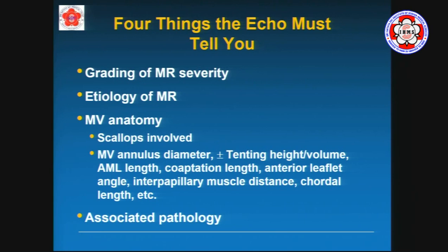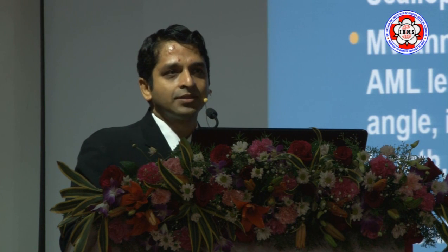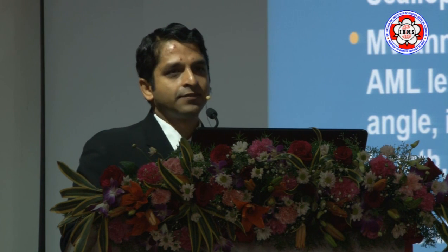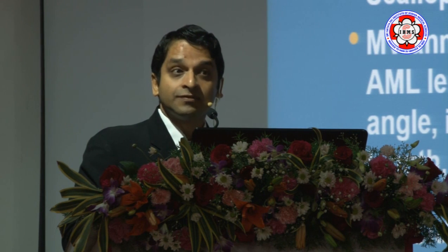In modern internet terminology: four things the echo must tell you. First, you need to know the grading of MR severity. Second, you need to know the etiology of MR — that includes not only the Carpentier classification, but also the more distinctive etiologic classification. Third, the mitral valve anatomy, including segmental analysis. And finally, any associated pathologies such as LV size, LV function, LA size, associated valvular pathologies, left atrial appendage thrombus, and so forth.